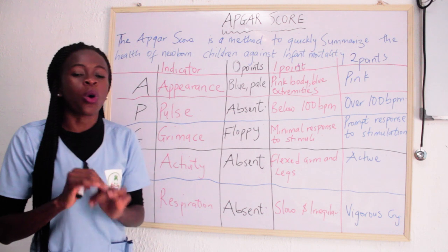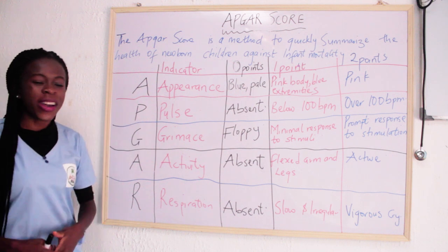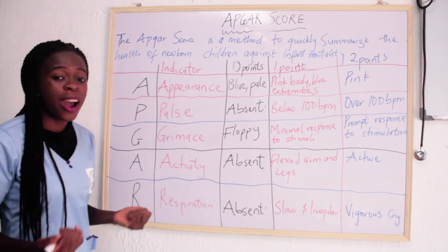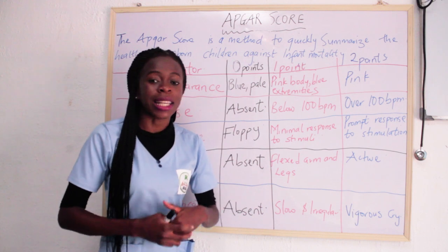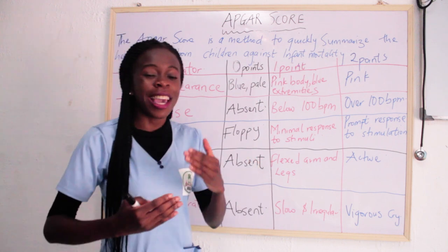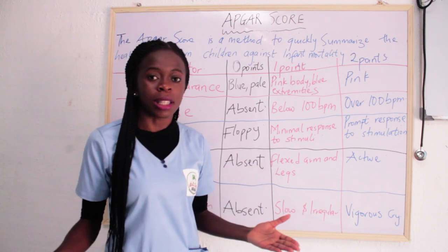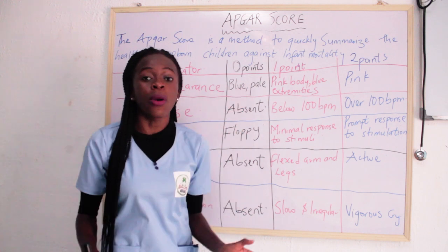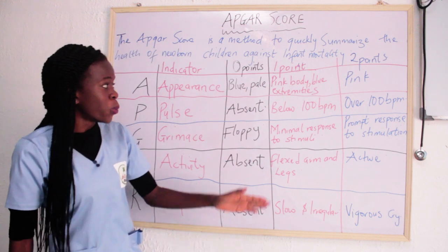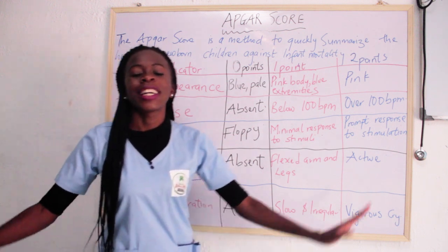So this is what Apgar score is all about. To remember it: A for Appearance, P for Pulse, G for Grimace, A for Activity, R for Respiration. The highest score you can get is 10 — that shows the baby is active, gave a vigorous cry, is pink, and has a pulse of over 100 beats per minute. The lowest is zero, which can signify death if care is not taken, because the baby is blue, the pulse is absent, the grimace is floppy, the activity is absent, and the respiration is absent.